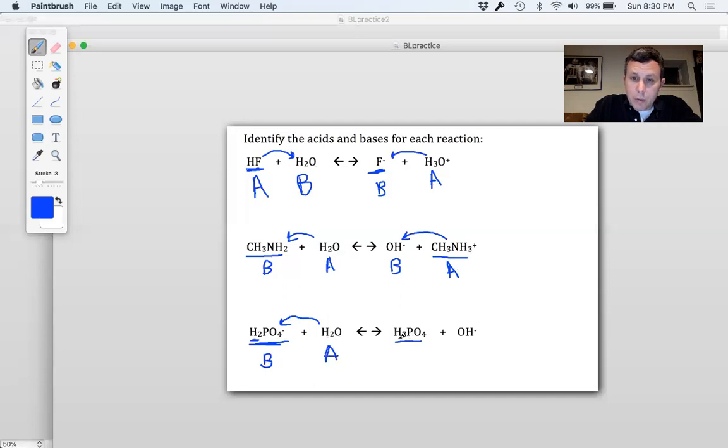If it were going to go the other way, if H3PO4 were to become H2PO4-, it would be giving H+ to OH-, so this would be the acid, and this would be the base.